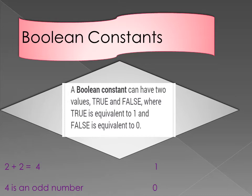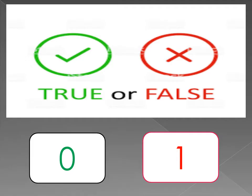As you can see on your screen, two statements are given. In the first statement, 2 plus 2 equals 4 — this is a true statement, that's why it is equivalent to 1. The second statement is '4 is an odd number' — this statement is false, that's why it is represented by the number 0. Boolean constants always give us two values which are true or false.